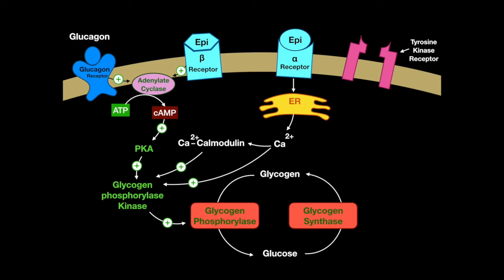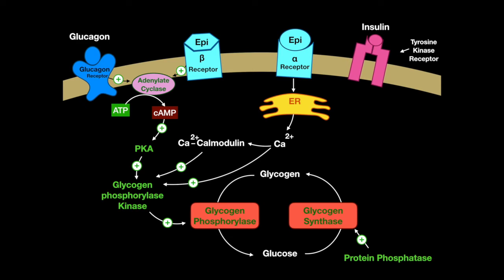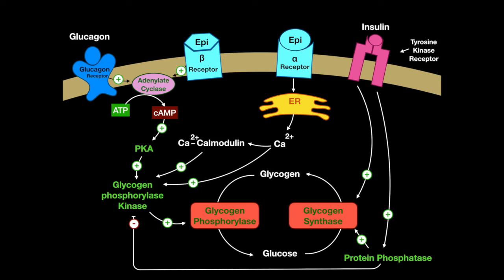On the other end of the spectrum, there is glycogen synthase. When glycogen needs to be synthesized rather than broken down, protein phosphatase will stimulate glycogen synthase. After a meal, insulin is released, which binds to a tyrosine kinase receptor that dimerizes. This stimulates protein phosphatase, but also glycogen synthase itself, thus synthesizing glycogen. Since both pathways are directly opposite, protein phosphatase during times of glycogen synthesis inhibits glycogen phosphorylase kinase, while protein kinase A's activation during glycogen breakdown inhibits glycogen synthase.